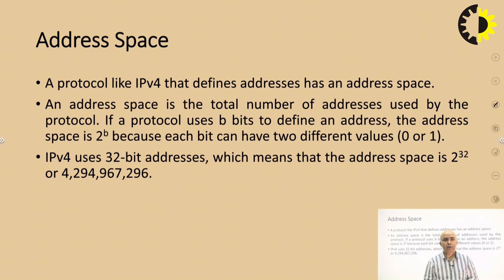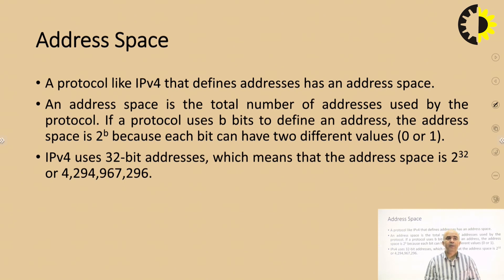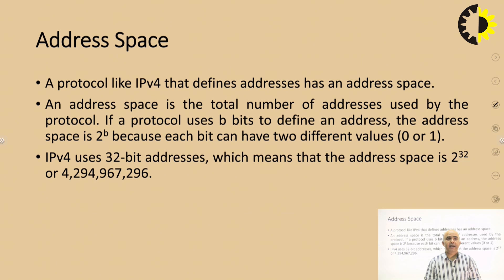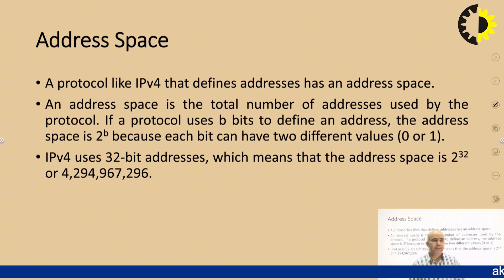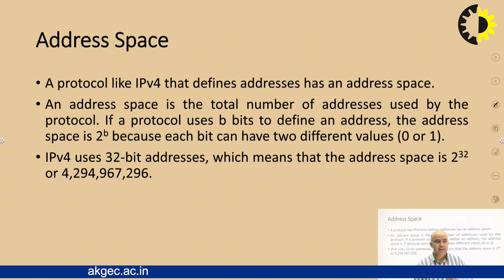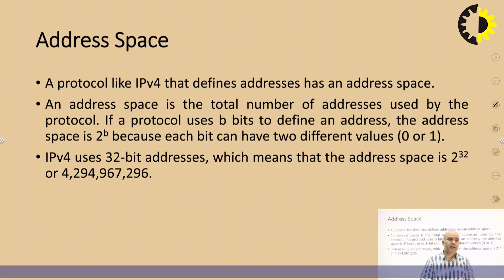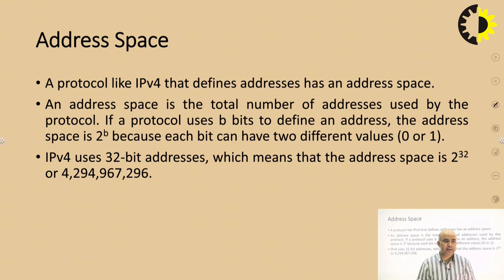Address space plays an important role in IPv4. An address space is the total number of addresses used by any protocol — in this case, TCP/IP. If a protocol has B number of bits to define the address, then the address space must be 2 to the power B. In IPv4, we have a 32-bit address scheme, which means the address space is 2 to the power 32, or 4,294,967,296 addresses that can be allocated on the internet by IPv4.